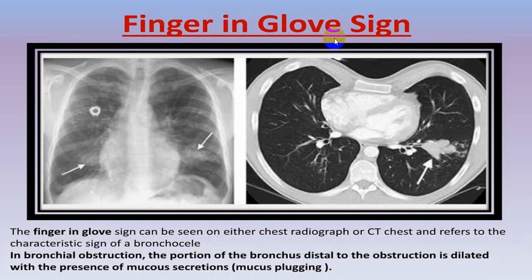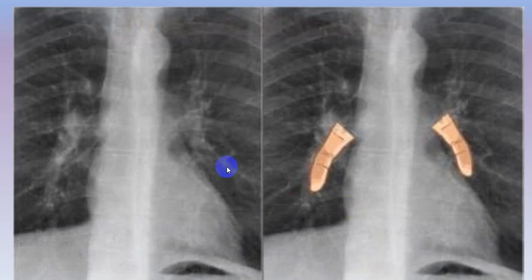The finger-in-glove sign can be seen on either chest X-ray or CT, as a sign of bronchocele. In bronchial obstruction, the portion of the bronchus distal to the obstruction is dilated with mucous secretions — called mucous plugging. You can see the dilated portion here, and that is given the name finger-in-glove sign.